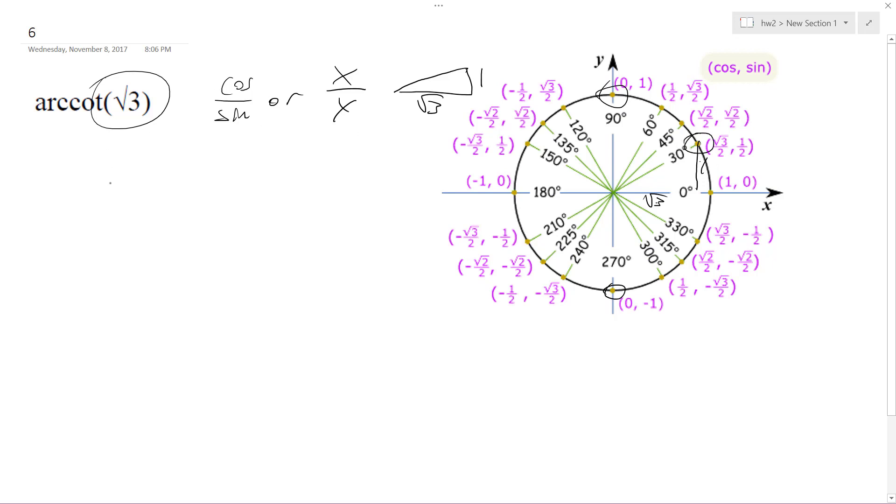It's gonna be pi over 6. Pi over 6 is your solution, and the reason why it's only this is because the values you can pick for arc cotangent are negative pi over 2 to pi over 2.